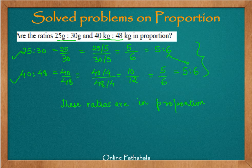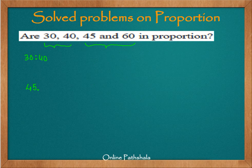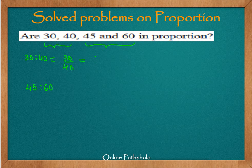Let us look at another example: are 30, 40, 45, and 60 in proportion? The first two terms form the first ratio and the second two terms form the second ratio — that is the way we specify a proportion. We need to find out whether 30 is to 40 and 45 is to 60 are in proportion. We find the simplest form of 30 by 40 by dividing both by 10, which gives us 3 by 4.